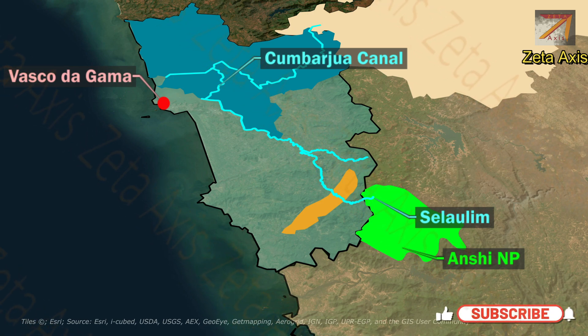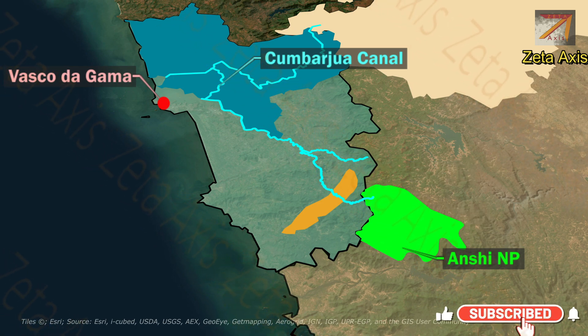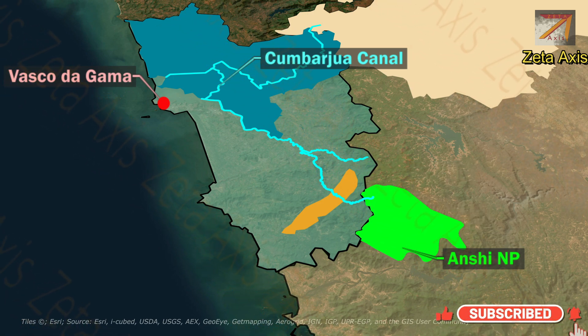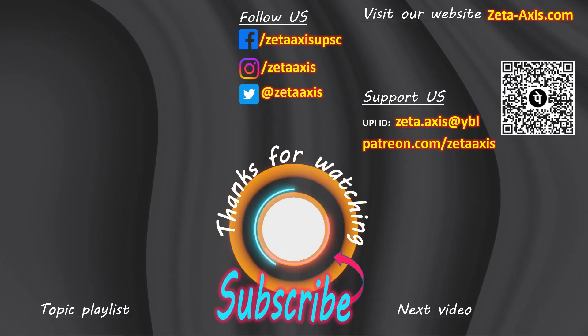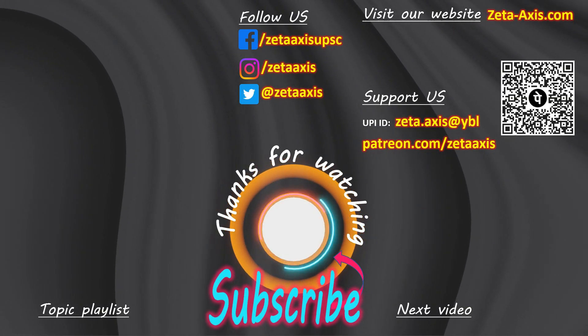The waters of the Mondovi river and Zuari river flow into the Arabian Sea near Cabo Aguada, a common point where both rivers form Mormugao Harbour.